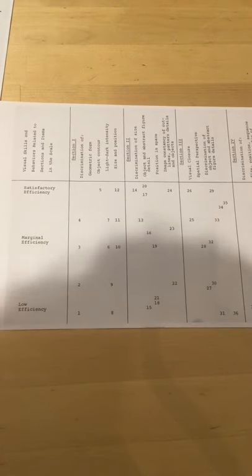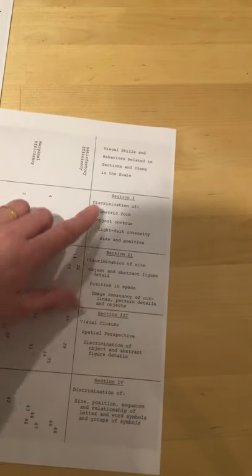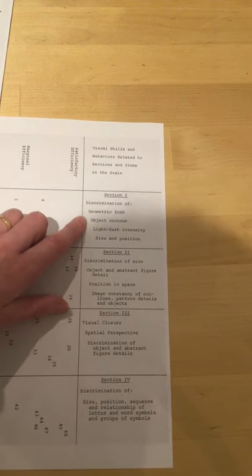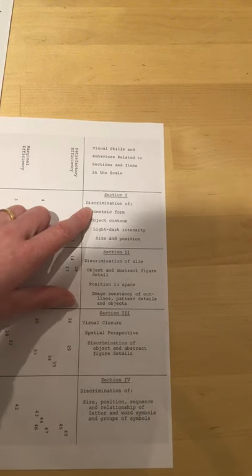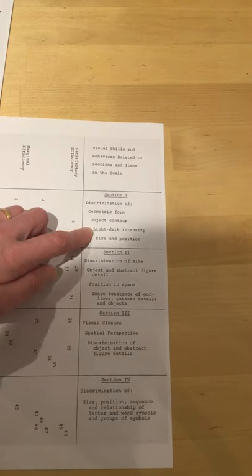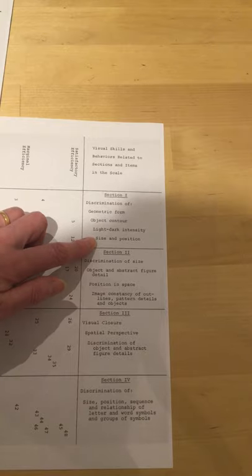Now before I go on and show you other pages I'm going to just slip this one into shot here. So this is the grid that you will complete afterwards and if I turn it this way you'll see the things that section one is assessing. So it's looking at discrimination of geometric form, object contour, light dark intensity, so that was like the one I showed you at number six, and size and position.